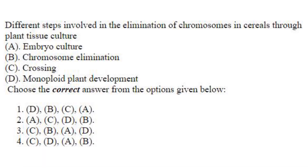Different steps involved in the elimination of chromosomes in cereals through plant tissue culture: first will be crossing, C. Then comes chromosome elimination, B. Then comes embryo culture, A. And then comes monoploid plant development, D. So the answer is option 3: C, B, A, D.